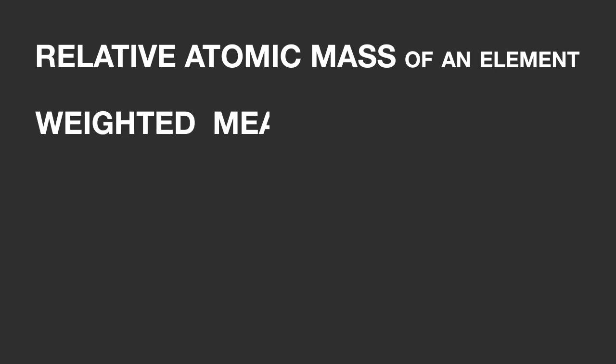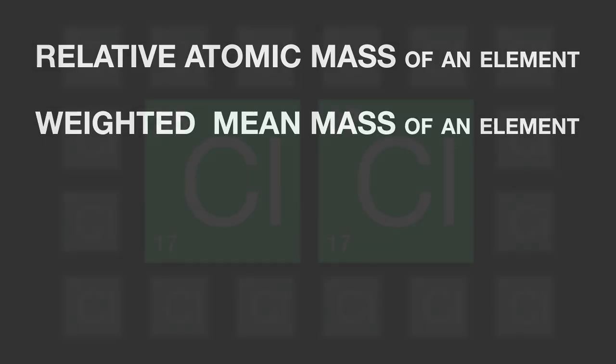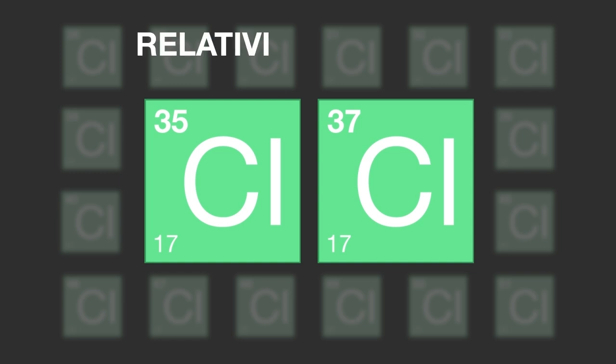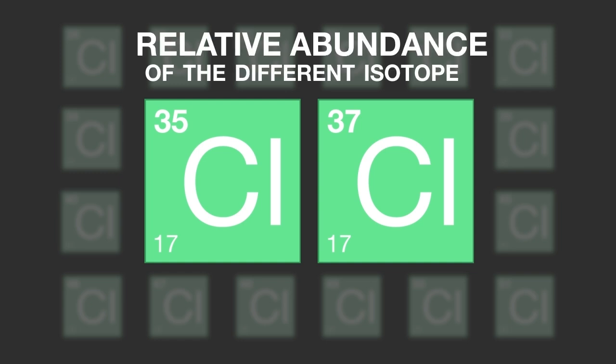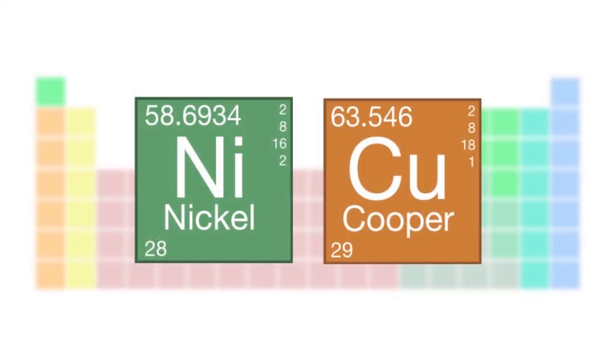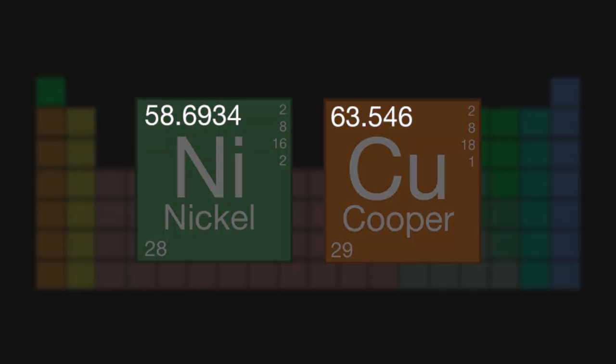So to recap, the relative atomic mass of an element is the weighted mean mass of the isotopes of an element. And by weighted, we mean that we are taking the relative abundance of each isotope into consideration. And this is why relative atomic masses aren't always whole numbers.